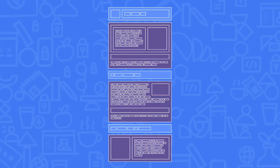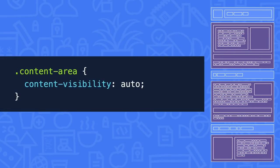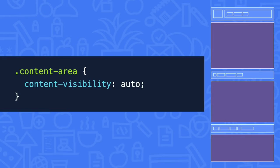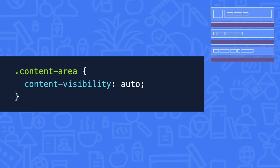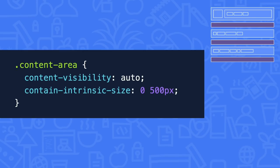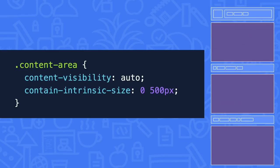Let's start with these content areas. We're going to give them a content-visibility of auto. This means the browser can skip the layout of the children while the container is outside the viewport. But skipping that layout means the container loses its height, so we use contain-intrinsic-size to set a fallback content size for the element. This lays the containers out as if they had a single child that's 0 pixels wide and 500 pixels tall. And because the container is block level, it stays full width.